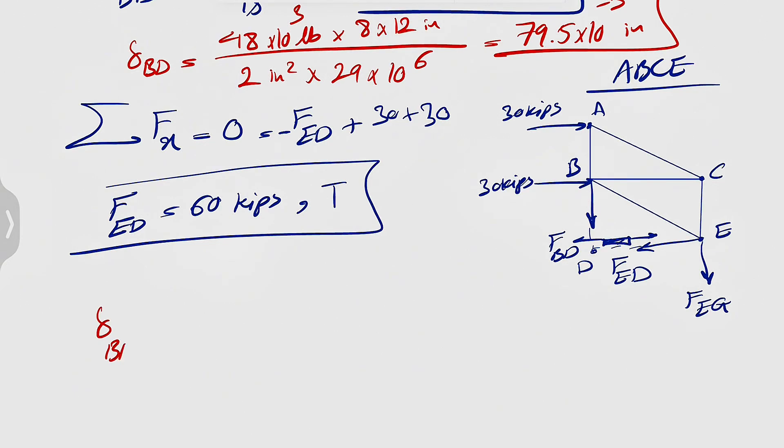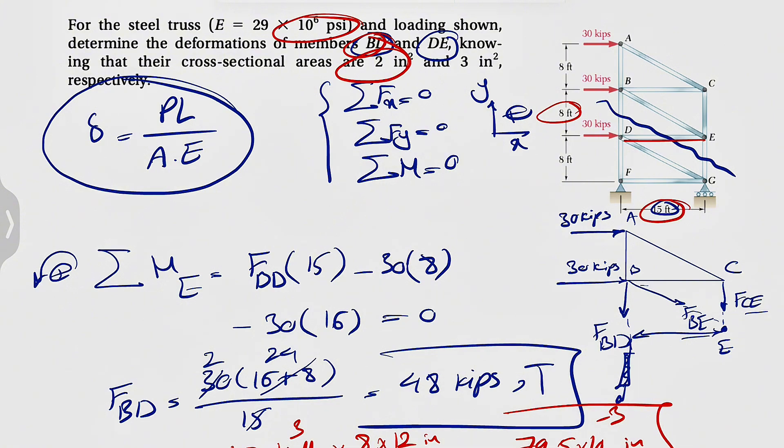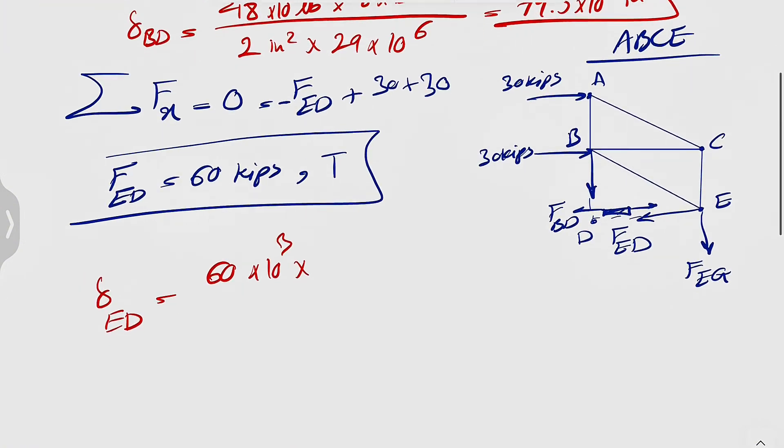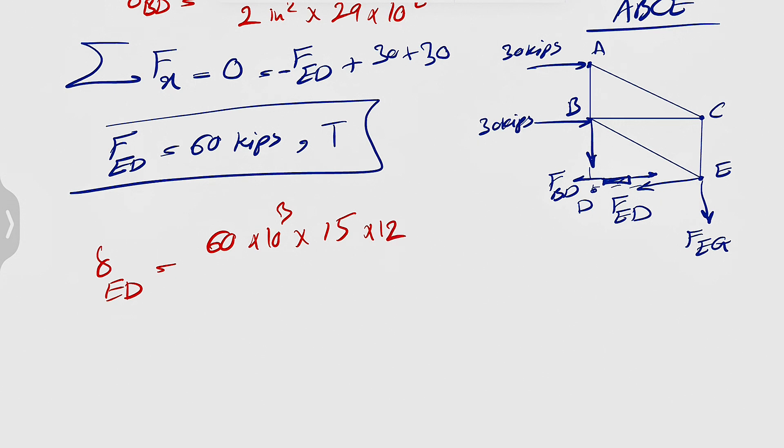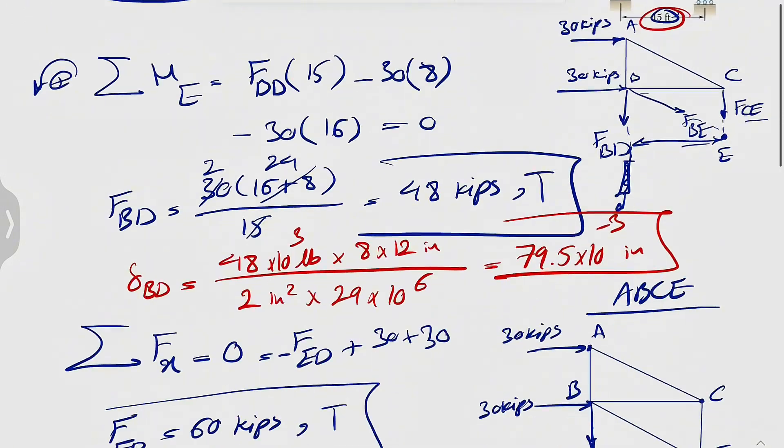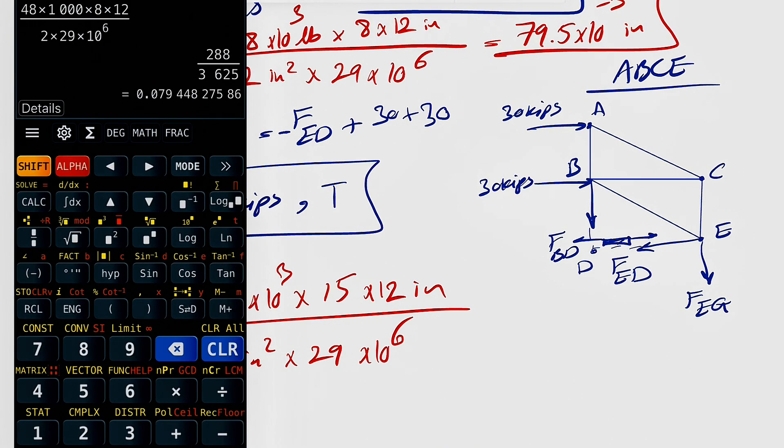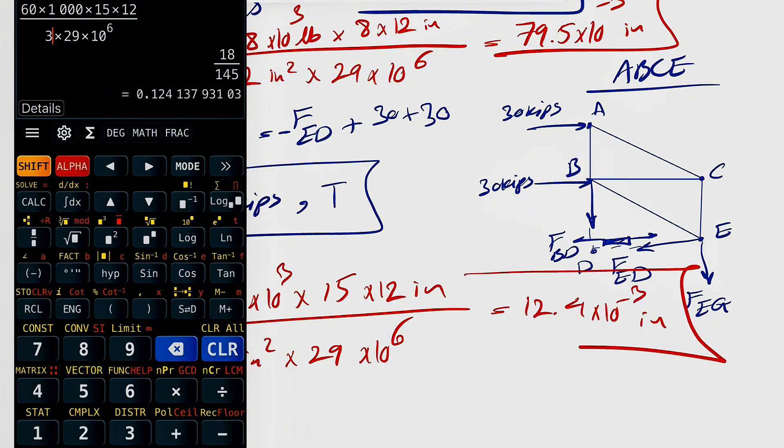And for ED, it's going to be 60 times 10 to the 3 again. The length of ED is 15, so 15 feet. We're going to multiply it by 12 to get it in inches. And the area, I think it was 3, so the area of DE is 3. So here we're going to have 3 inches squared times 29 times 10 to the 6th. And this is going to give us 12.4 times 10 to the minus 3 inches.